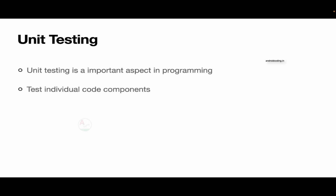Unit testing has very good importance in software development. With unit testing you can test the individual code components — units are nothing but small pieces of code. For example, an easy example for you to understand: you are trying to build a calculator application and there you have a component to add two numbers. You provide two numbers into it and try to fetch the output — the work of this component is to add those two numbers and provide you the result.